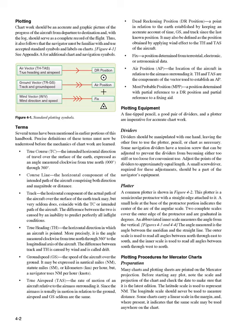Air position (AP): the location of the aircraft in relation to the air mass surrounding it. TH and TAS are the components of the vector used to establish an AP. Most probable position (MPP): a position determined with partial reference to a DR position and partial reference to a fixing aid. Plotting equipment — a fine-tipped pencil, a good pair of dividers, and a plotter — are imperative for accurate chart work.